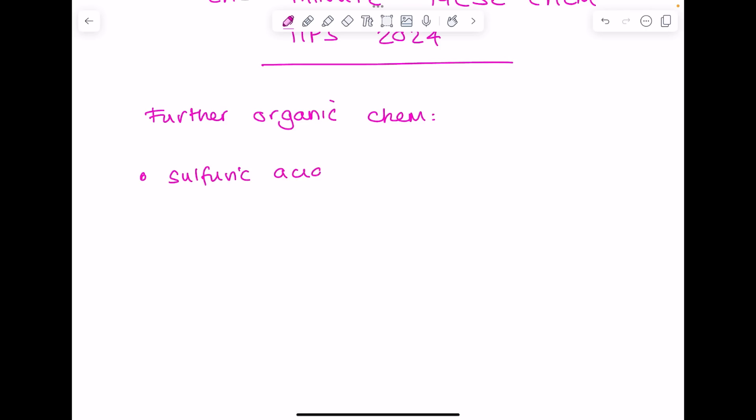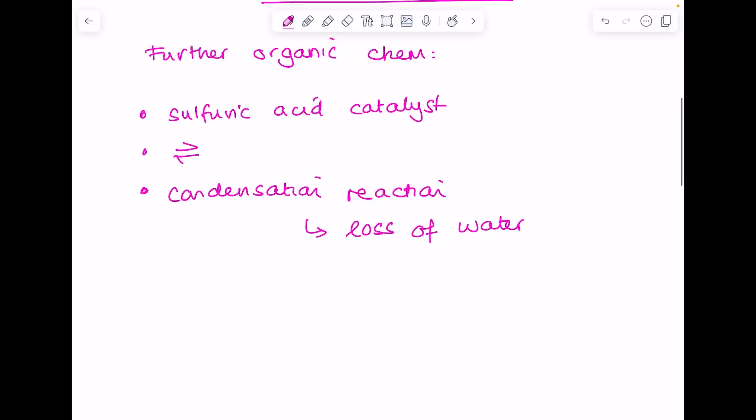It's a reversible reaction, that's what that arrow there means. You'll need to remember that it's a condensation reaction, which if they ask you what that means, involves the loss of water. To make an ester you need an alcohol, you need a carboxylic acid, there's your reversible arrow, you'll produce your ester and that water molecule I just mentioned.